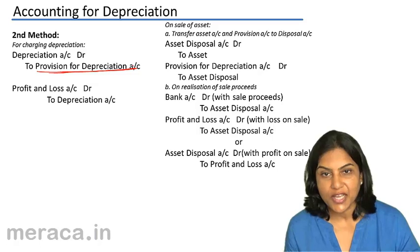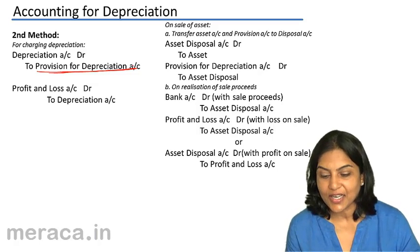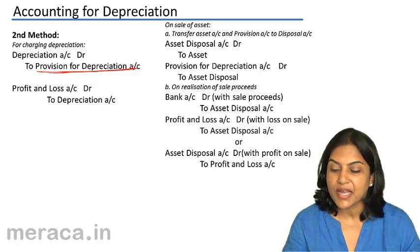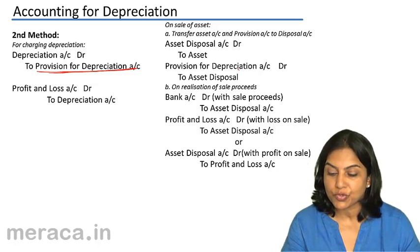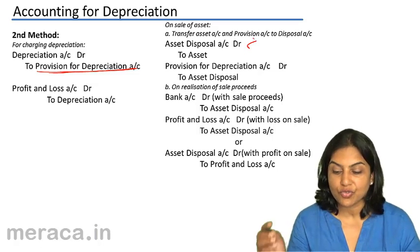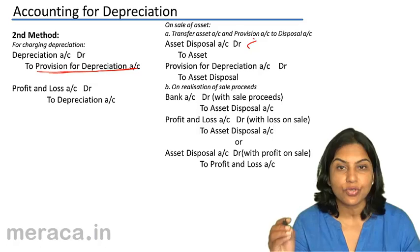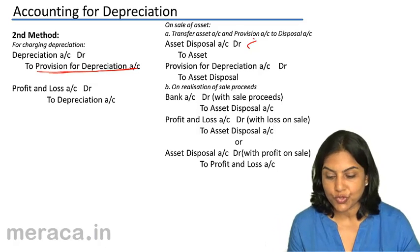In order to transfer the asset account, we credit the asset account and debit the asset disposal account. The journal entry is: asset disposal account debit to asset account — transferring the asset account balance to the asset disposal account.